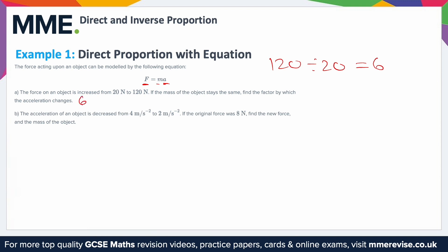The second part: the acceleration of an object is decreased from 4 metres per second squared to 2 metres per second squared. If the original force was 8 newtons, find the new force and the mass of the object.